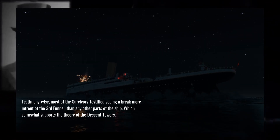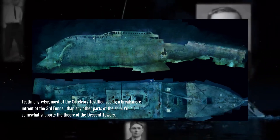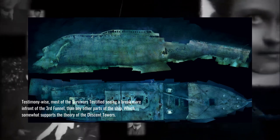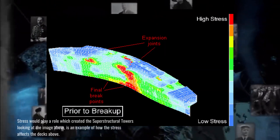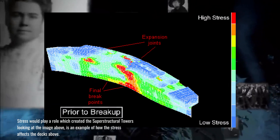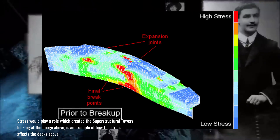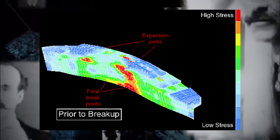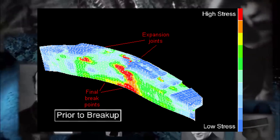One account noted it seemed to break in half between the four funnels, with the front going down quietly and the stern staying up a minute before sinking. Testimonies such as these predominantly indicate a break in front of the third funnel. From an examination of the wreck, it appears that the epicenter, or primary fracture, began in this same area. As the break-up progressed, additional cracks formed, radiating through the superstructure as stress increased, contributing to the formation and eventual detachment of the towers.